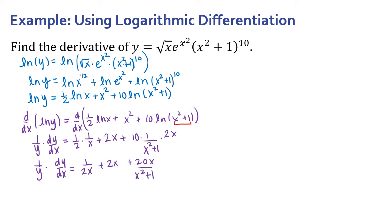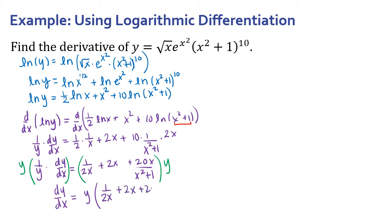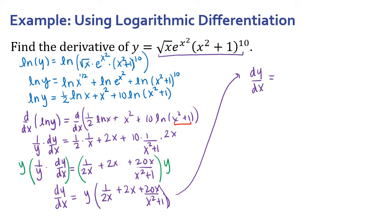Now I can substitute in what y is to isolate dy/dx. So dy/dx equals y times [1/(2x) + 2x + 20x/(x² + 1)]. Substituting y: dy/dx equals √x · e^(x²) · (x² + 1)^10, times the quantity 1/(2x) plus 2x plus 20x/(x² + 1).